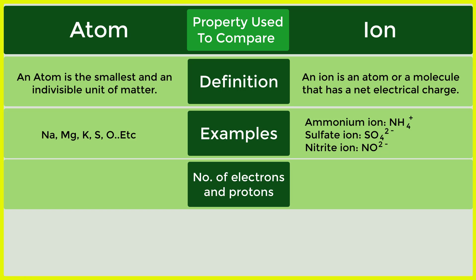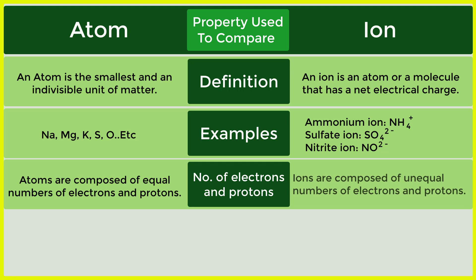Number of electrons and protons: Atom - atoms are composed of equal numbers of electrons and protons. Ion - ions are composed of unequal numbers of electrons and protons.